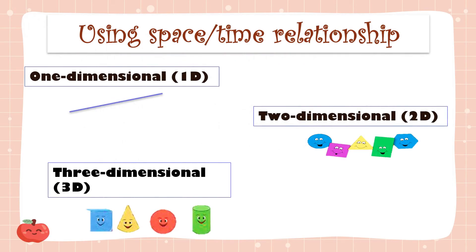Using space-time relationships — for this one we have three types: one-dimensional, two-dimensional, and the last is three-dimensional.